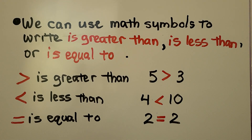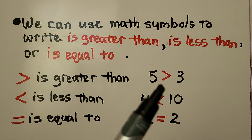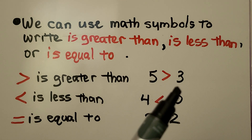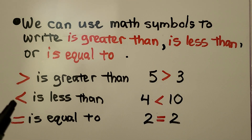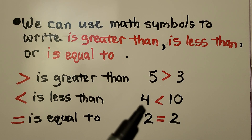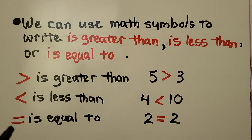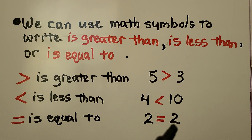This symbol is for is greater than — 5 is greater than 3. This symbol is for less than — 4 is less than 10. And of course you know this is equal to — 2 is equal to 2.